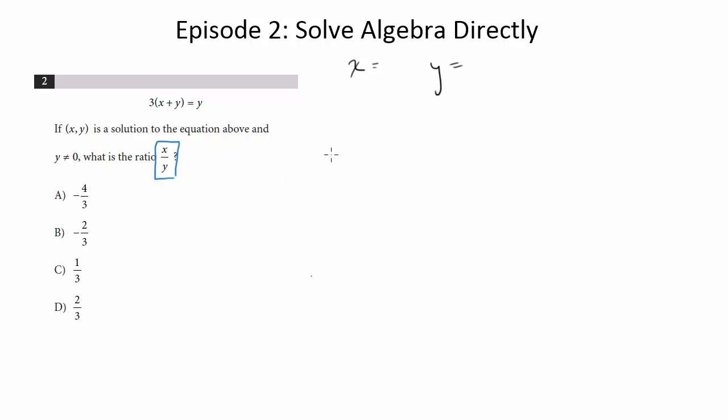So what does that look like here? So we've got 3 times x plus y equals y. So first thing we'll do is we'll distribute this 3. So 3x plus 3y equals y. Let's bring all the x's and y's together. So I'm going to throw the 3y over to the other side. So I'm going to get 3x equals negative 2y.